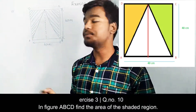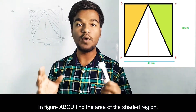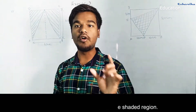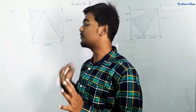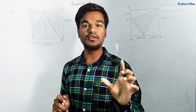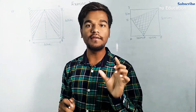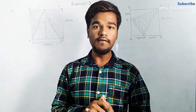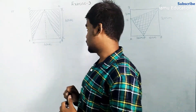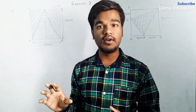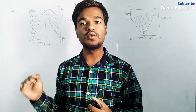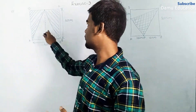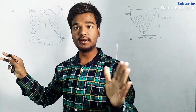We are going to use two methods. The first method: this triangle occupies half of the region of the square, so we can find the area of the square and take half of that region — that will equal the area of the shaded region. The second method: we find the area of the square and subtract the area of the triangle from it to get the shaded region.